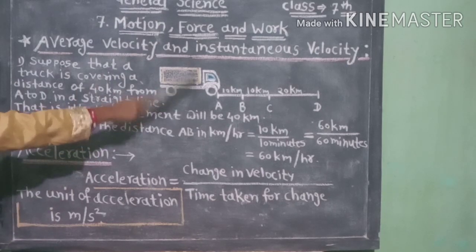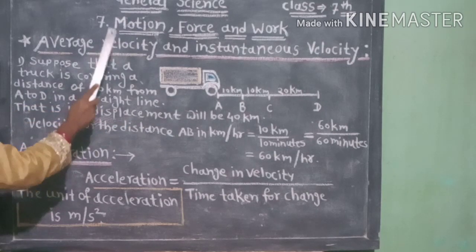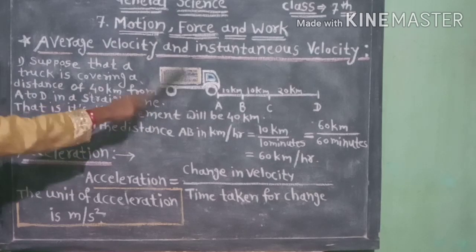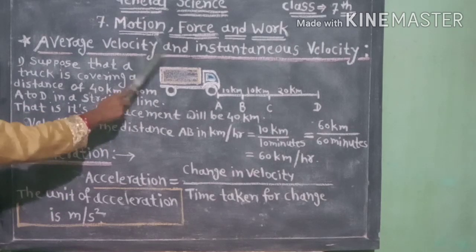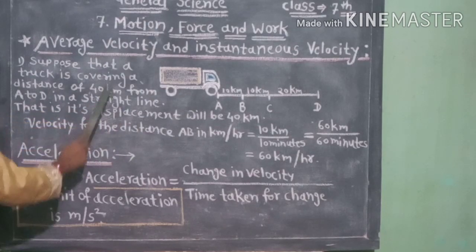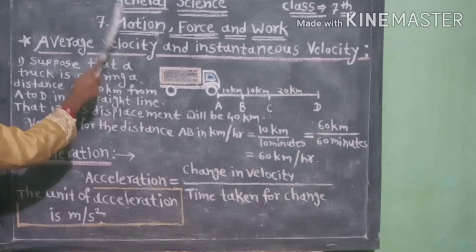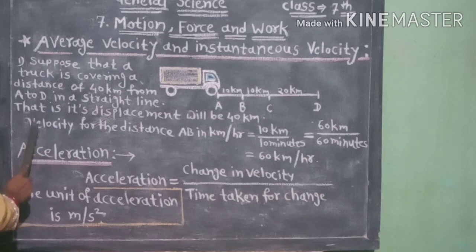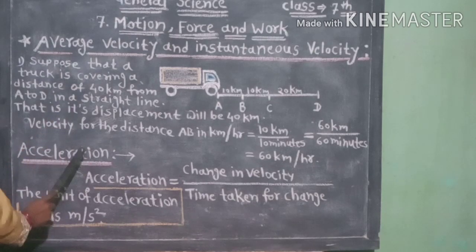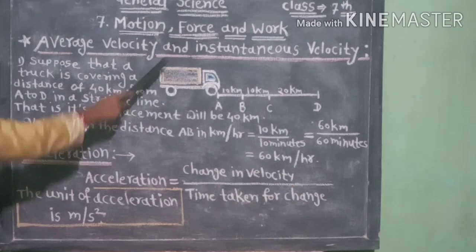AB, BC, and CD. However, the average velocity for the entire route AD is 40 km per hour. The velocity at a particular moment of time is called instantaneous velocity. The instantaneous velocity can be different at different times.